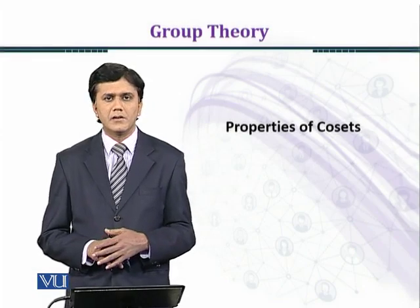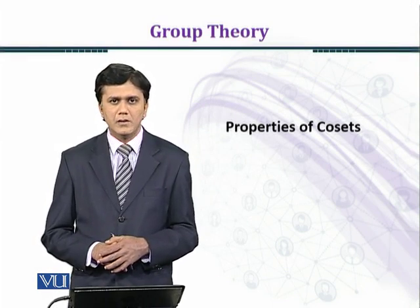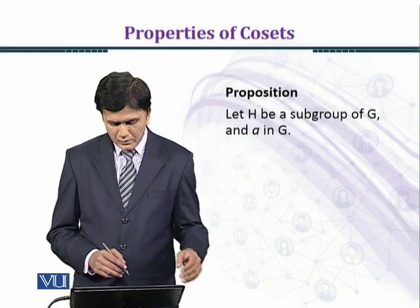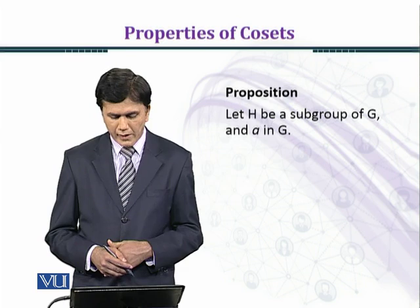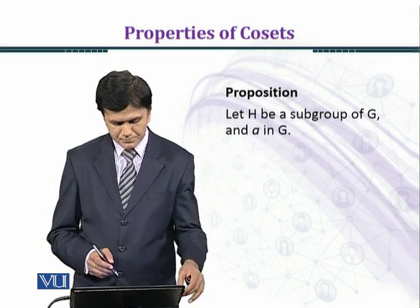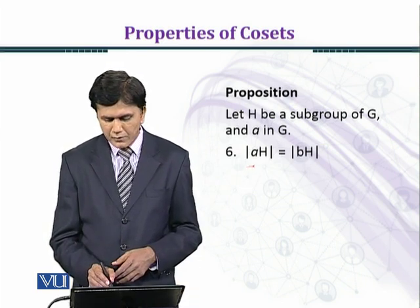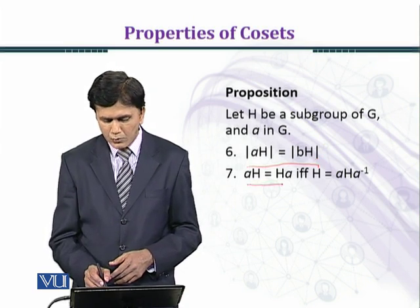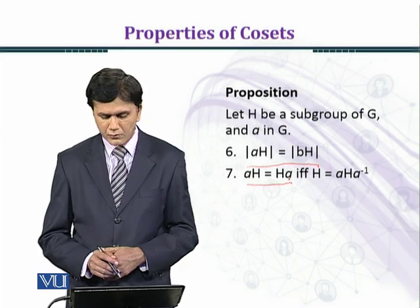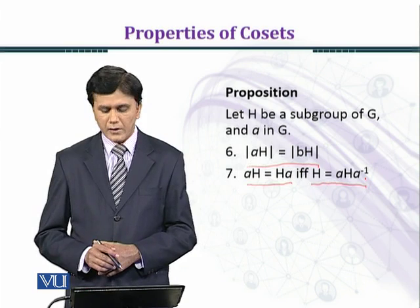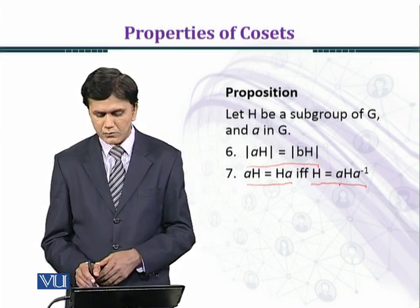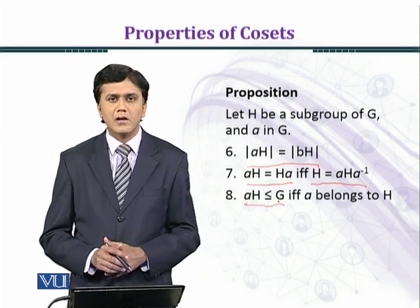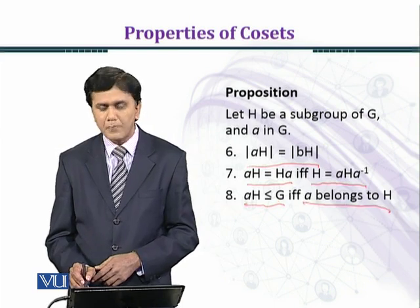In this module, we shall discuss some more properties of cosets which are very useful in establishing the Lagrange theorem. Let H be a subgroup of G and A belongs to G. The properties are: the cardinality of AH equals the cardinality of BH; AH equals HA, meaning the left coset equals the right coset if and only if H equals AHA inverse; and property 8: AH is a subgroup of G if and only if A belongs to H.